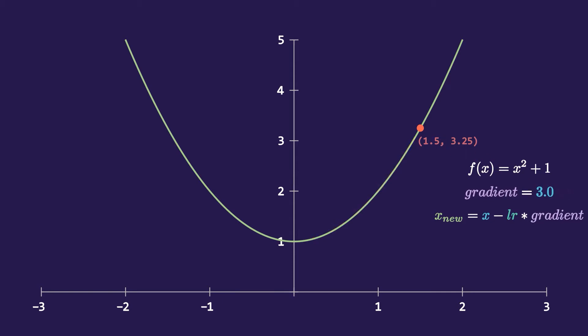The value of the gradient is 3, we can substitute this in the next equation. For now let the value of learning rate be 0.1. If we calculate this we will get 1.2 which is the x new and if I plot this we have got the new point which is the minimized version of the previous point.